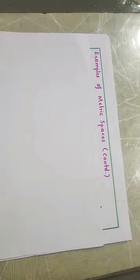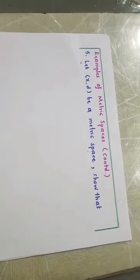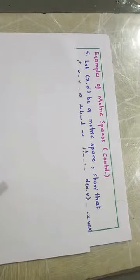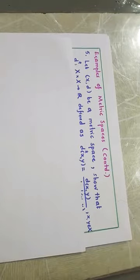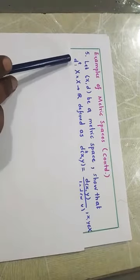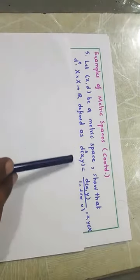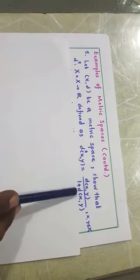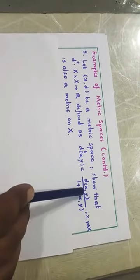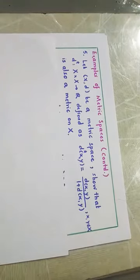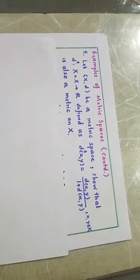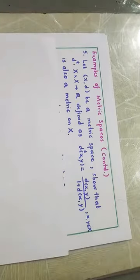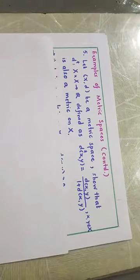We continue the examples of Metric Spaces. Let us consider (X, D) be a Metric Space. We have to show that the map D* from X × X to Y, defined by D* = D/(1+D), is a metric. It is also a metric on X. We know that there are four conditions: D(x,y) should be non-negative; D(x,y)=0 if and only if x=y; D(x,y)=D(y,x); and the triangular inequality. Let us check those conditions.